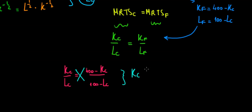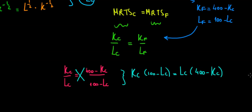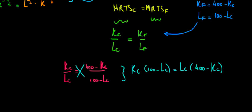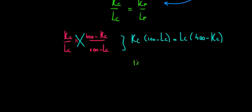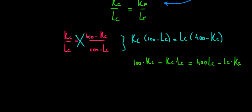Doing the cross product gives us: K_C times (100 minus L_C) equals L_C times (400 minus K_C). Opening the brackets: 100·K_C minus K_C·L_C equals 400·L_C minus L_C·K_C.